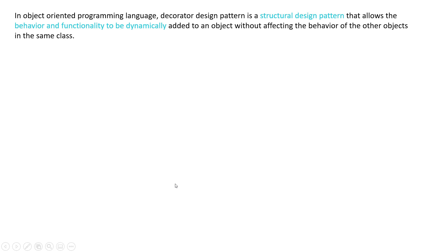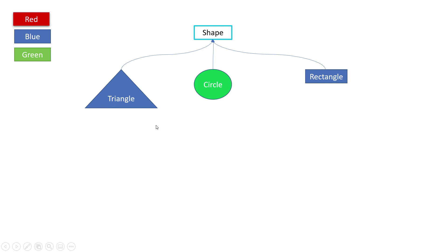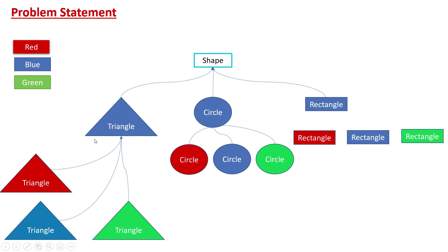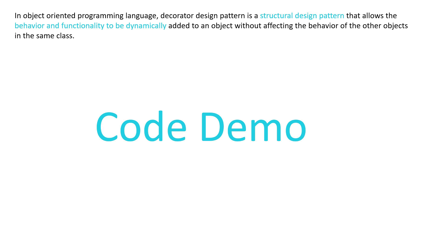To solve this problem, the Decorator Design Pattern comes into picture. By definition, in object-oriented programming, the Decorator Design Pattern is a structural design pattern that allows behavior and functionality to be dynamically added to an object without affecting the behavior of other objects in the same class. So let's go back to the diagram — we wanted to apply properties to shapes without creating a huge set of concrete classes. This can be solved using the Decorator Design Pattern. Let's see how to achieve this using a code demo.